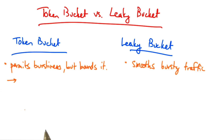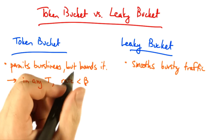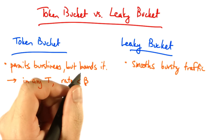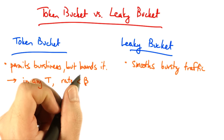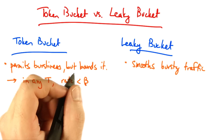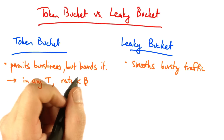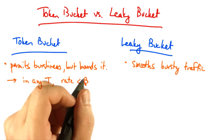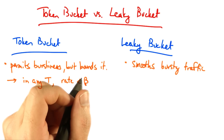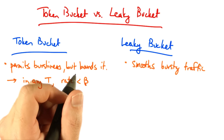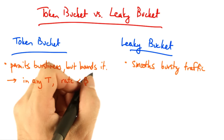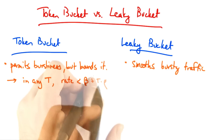The bound in a token bucket is as follows. If our bucket size is β, then we know that in any interval t, the rate is always less than β — that is, the maximum number of tokens that can be accumulated in the bucket.